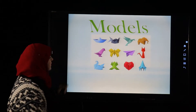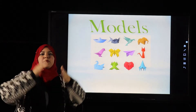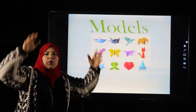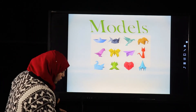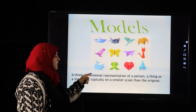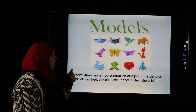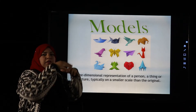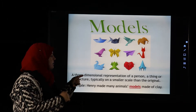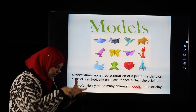The next word is 'models.' Models are like small things you make — for example, a small house that represents a real house. A model is a three-dimensional representation of a person, thing, or structure, typically on a smaller scale than the original. Example: Henry made many animal models made of clay.